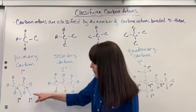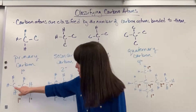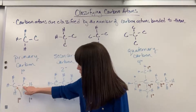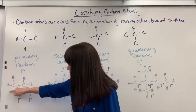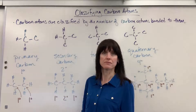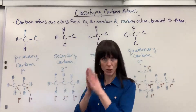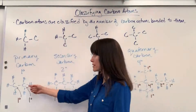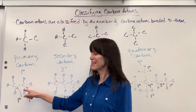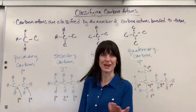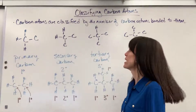Here's an example. I've got an ethane. This carbon is bonded to one carbon and has three hydrogens — that's primary. It's a carbon with one carbon bonded to it. This other carbon is the same thing: bonded to one carbon with three hydrogens, so it's also primary.